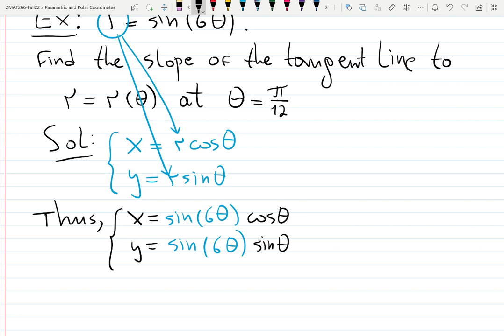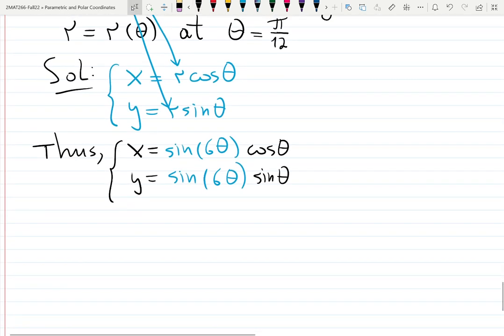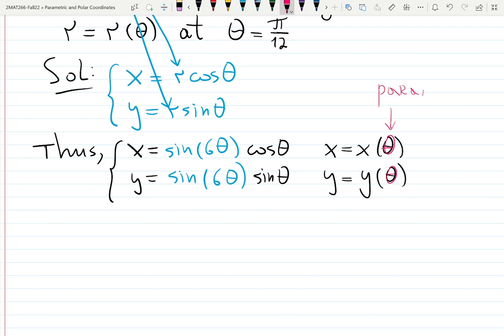Now, they ask us to find a derivative. Now, x and y both depend on only one variable, theta. X depends on theta and y depends on theta. Both of them are functions. That is a parameter. We learned what a parameter is. So, we're just talking here about the formula for the derivative, which we learned before. And the formula for the parametric form. So, theta is a parameter.